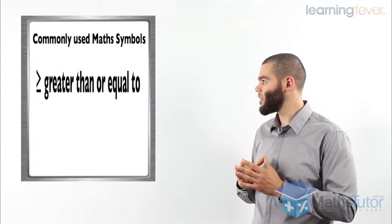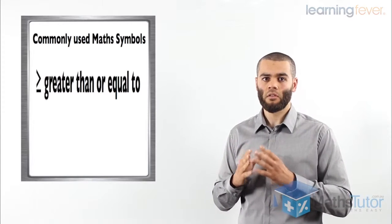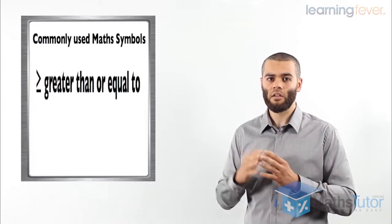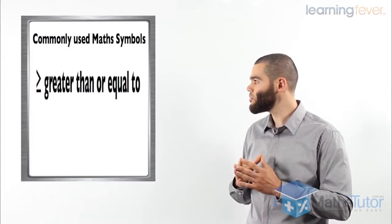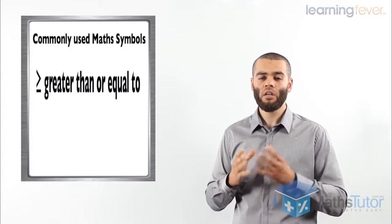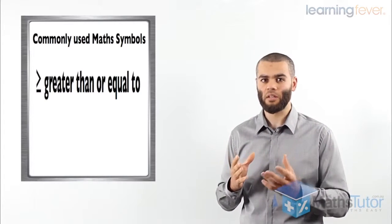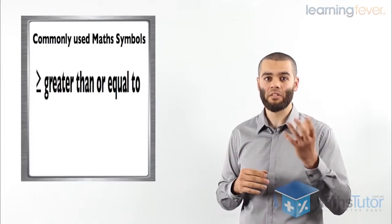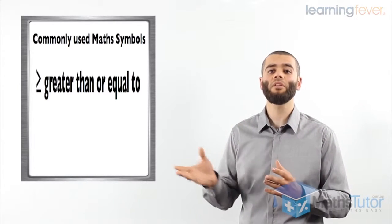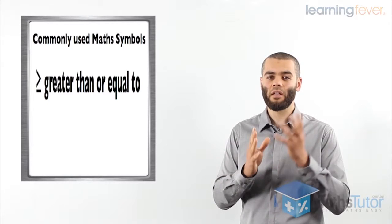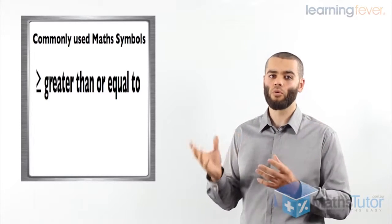Greater than or equal to is similar but the opposite. For example, x is greater than or equal to 10. That means x can be 10 or it can be bigger than 10 — it can be 11, 15, or 20. So we're saying x is greater than or equal to 10, meaning it can be 10 or more.